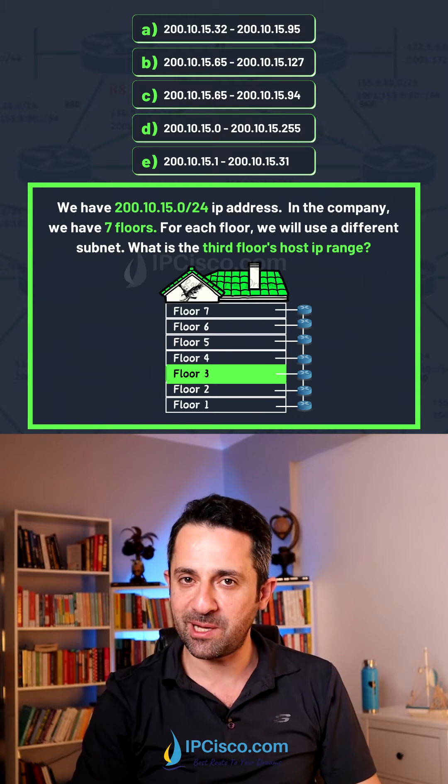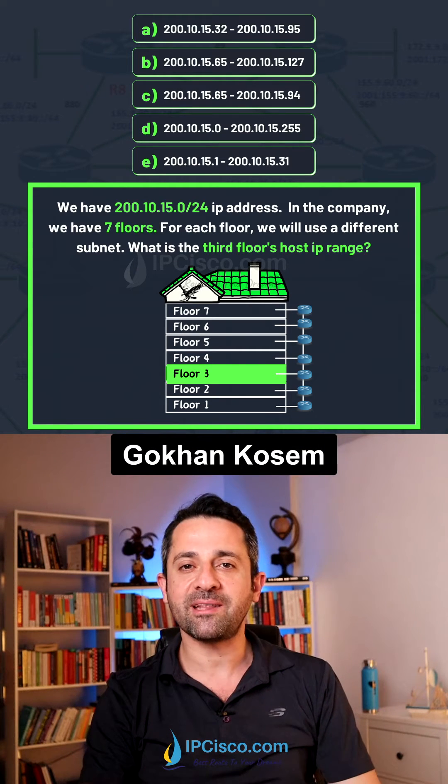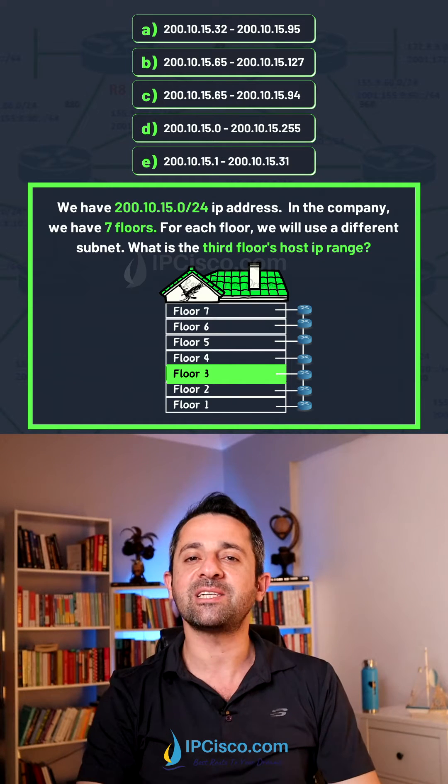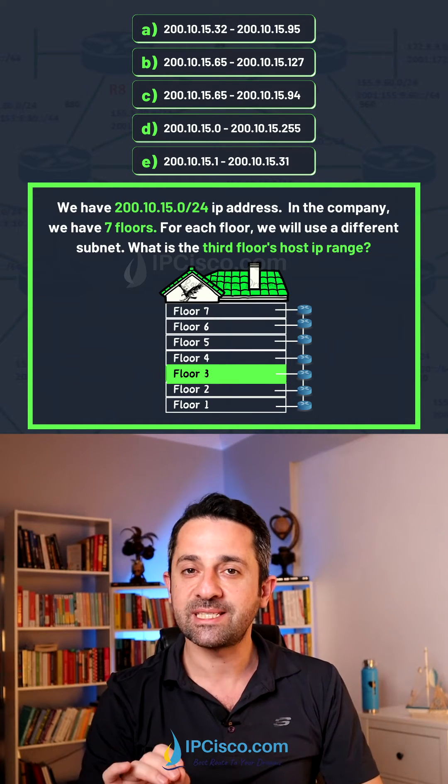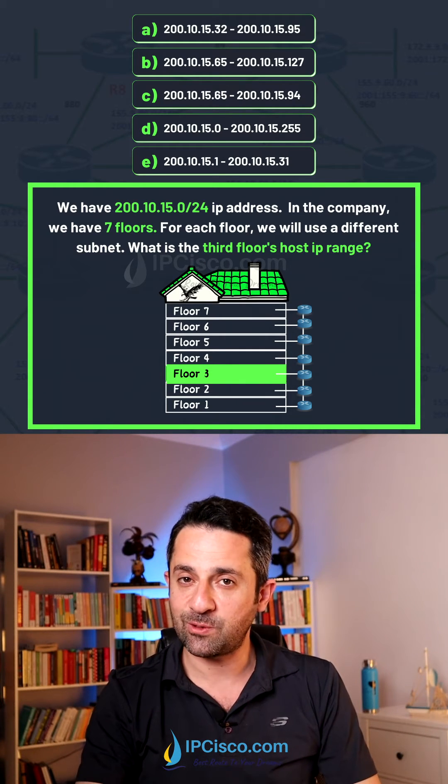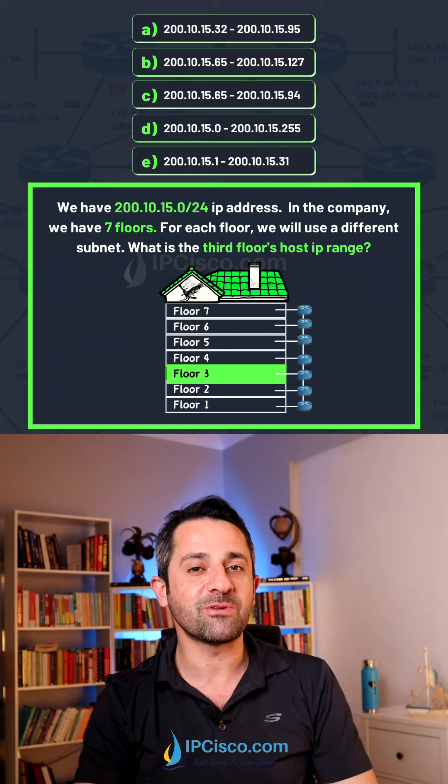What is the third floor's usable IP range? Our IP address is 200.10.15.0/24 and we have seven floors. In each floor we will use a different subnet, so let's focus on the question and learn how to find the IP range of these floors.